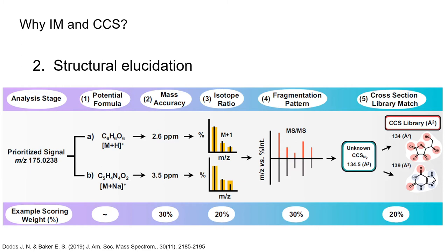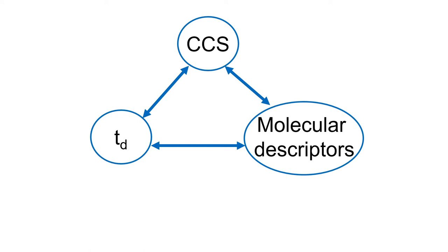Ion mobility can also be used for structural elucidation. In this case, analyte identification and structural measurement can be achieved by converting ion mobility measurements — so drift time — into collision cross-sections. This can be treated as an additional characteristic of the unknown compound under investigation, and under some experimental conditions we can use ion mobility in addition to mass accuracy, isotopic ratio, and fragmentation pattern.